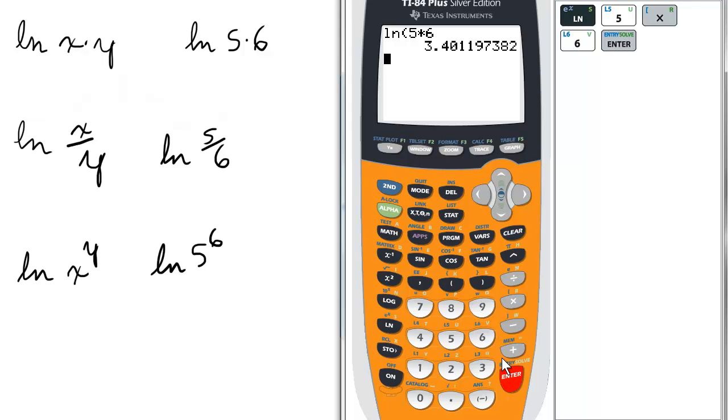Press enter, we get 3.4. Now, let's see if that's the ln of 5 plus the ln of 6, because maybe that's your intuition.